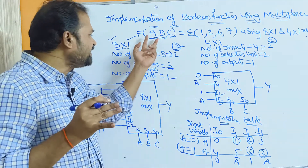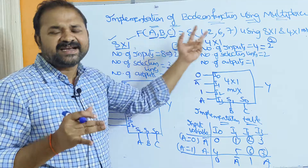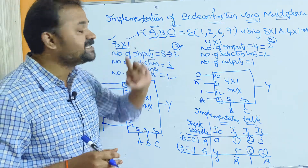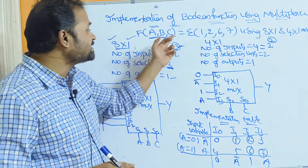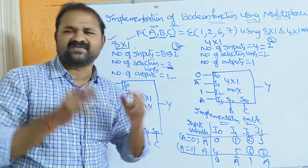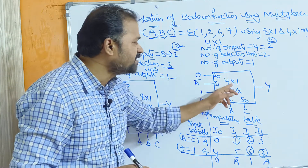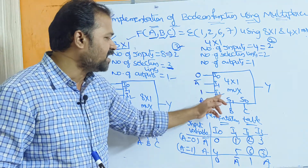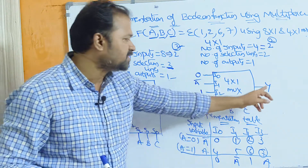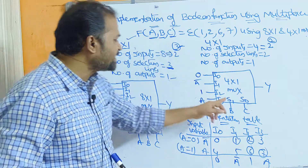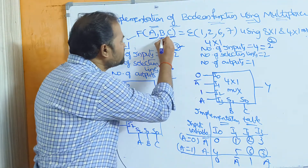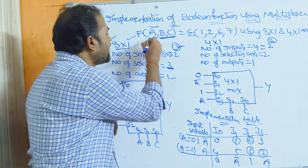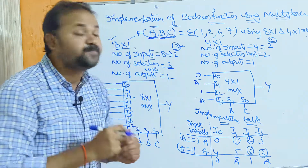That is our choice. We can take either a and b as selection variables with c as input, or b and c as selection variables with a as input, or a and c as selection variables with b as input. In our example, this is our 4-by-1 multiplexer with inputs i0, i1, i2, i3 and output y. Here s1 and s0 are the selection inputs, and we assume b and c are the selection variables, whereas a is the input variable.